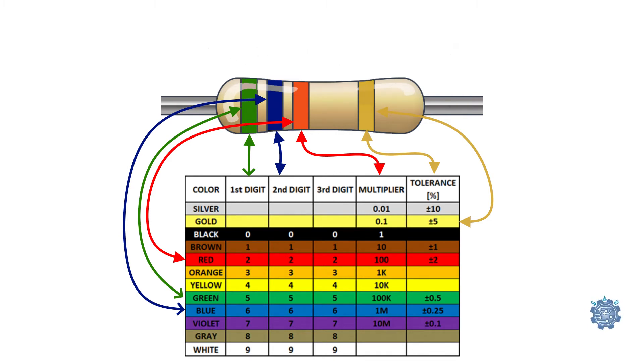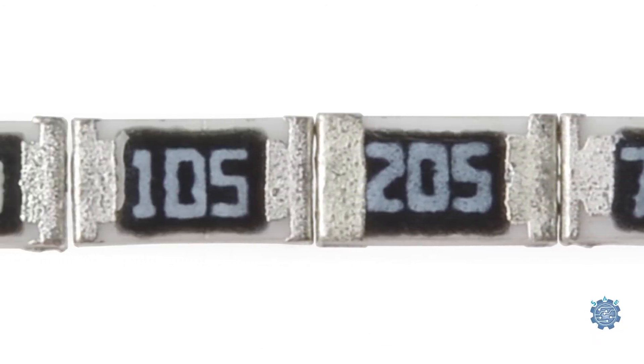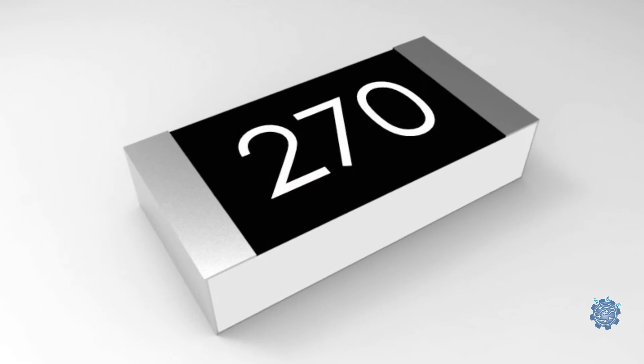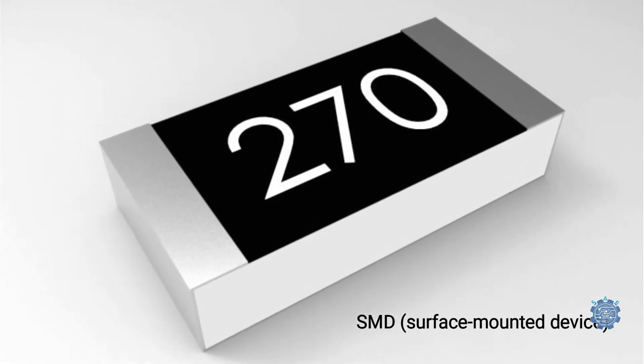Another kind of mark for resistors is a code with 3 or 4 characters printed on top of them. This code is used for SMD resistors and it is of several kinds.